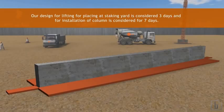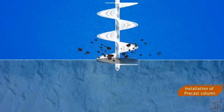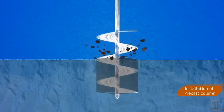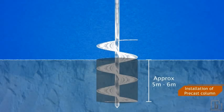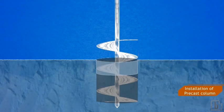Our design for lifting for placing at stacking yard is considered three days, and for installation of column is considered seven days. Installation of precast column: on initial completion of approximate five to six meter pre-boring, permanent liner of 8 millimeter thick of internal diameter 1300 per 1000 millimeter shall be inserted into the bored drilled hole with necessary verticality.